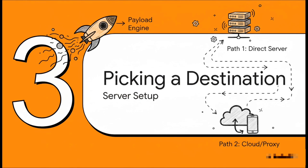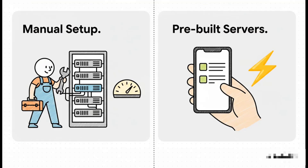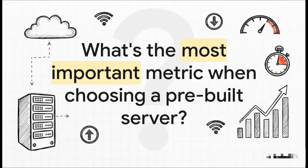Our engine is built. Now where are we taking this thing? We need a server. The tutorial shows us that there are two main ways to go about this — and here it is, the classic trade-off: control versus convenience. You can do a manual setup for likely better performance, but that means you have to go get your own account details. Or you can just use the pre-built servers right inside the app — it's way faster and easier, though you might have to watch a quick ad.